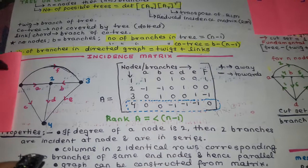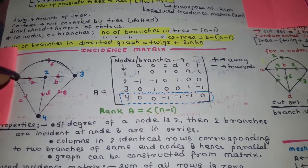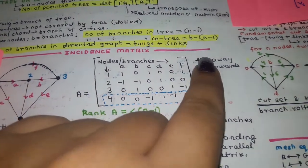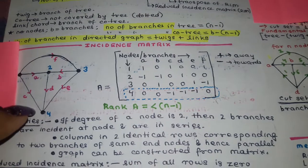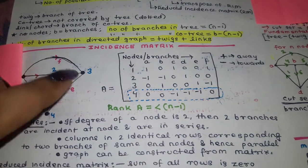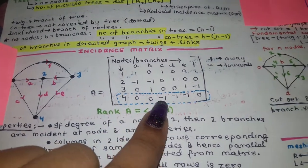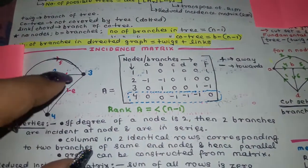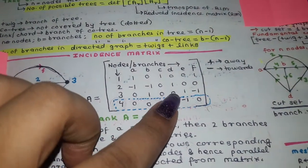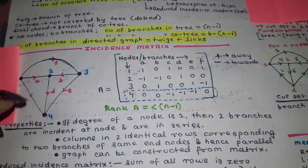Let's talk about the incidence matrix. Suppose you are given a graph and asked to find the incidence matrix. What you do is take all the nodes and write them vertically, take all the branches and write them horizontally. Then, taking one node at a time, assign zero to all branches that are not connected to that node. For example, branches a, b, and f are not connected to node 4, so they are assigned zero. For node 3, branches a, c, and d are not connected, so they are assigned zero.